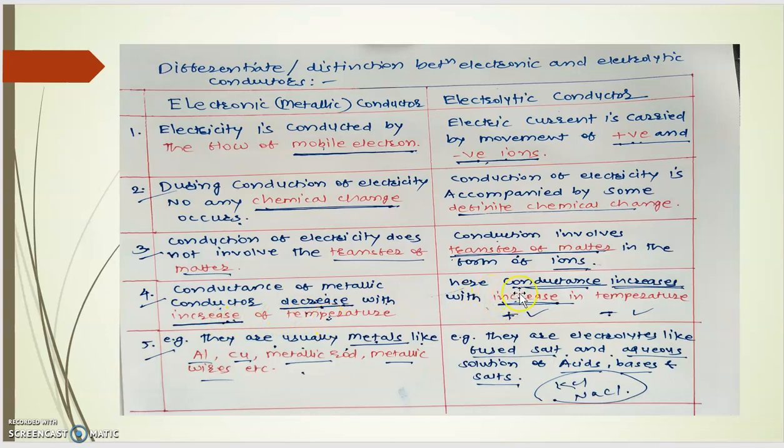But at the same time if you observe for electrolytic conductor if you increase the temperature, conductance increases with increase in temperature. Now there are positive ions and negative ions and both are moving. No anyone is stable. So if both are moving, if you increase the temperature, kinetic energy of both the ions that is positive as well as negative ion increases because of which speed increases and speed increases then conductance increases.